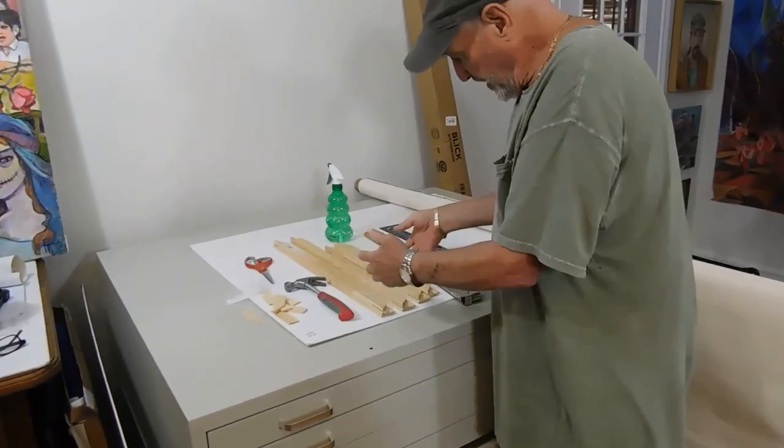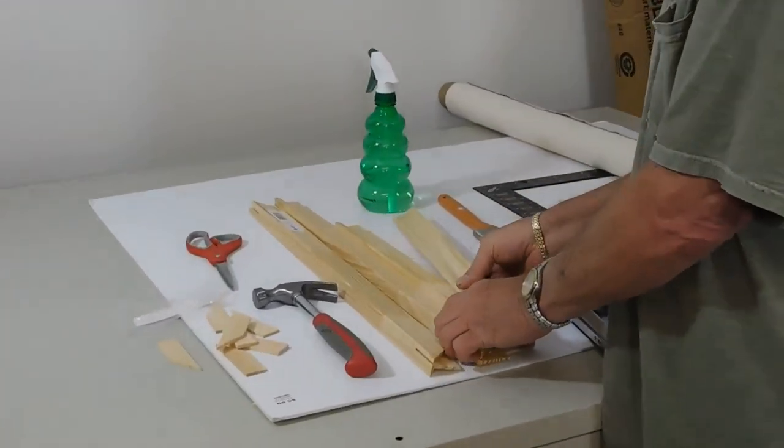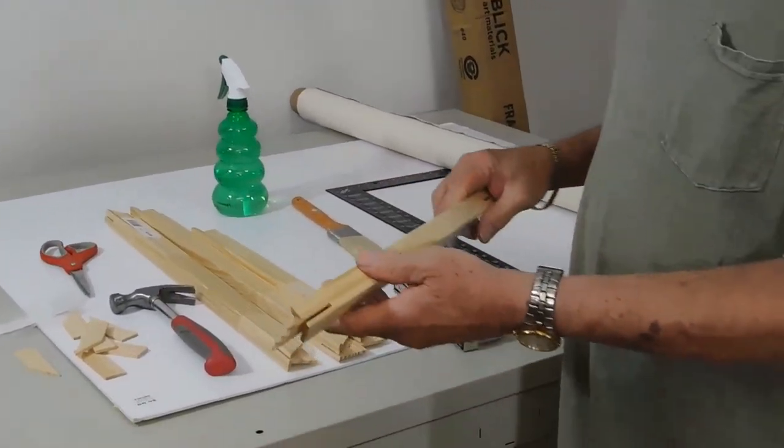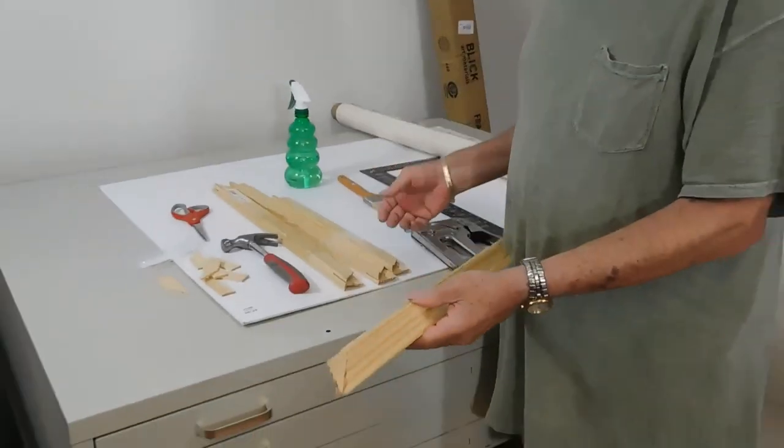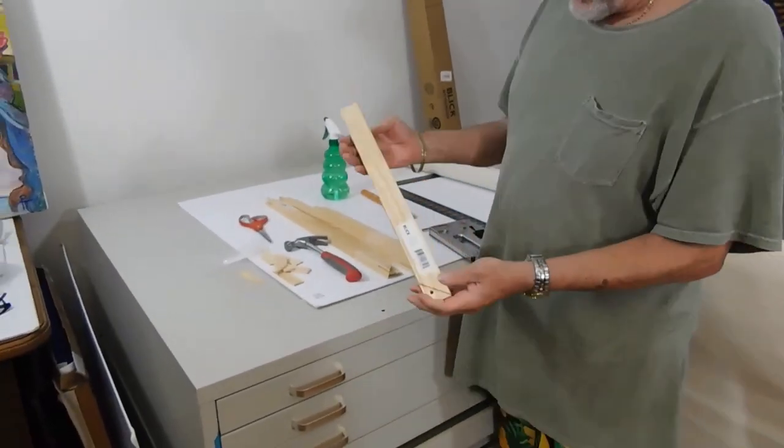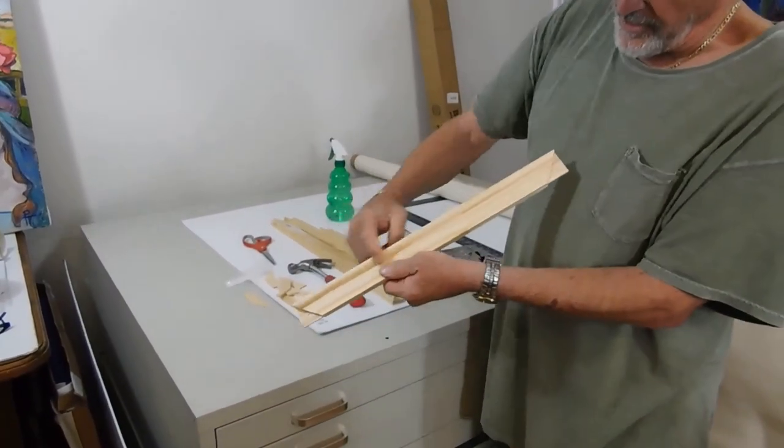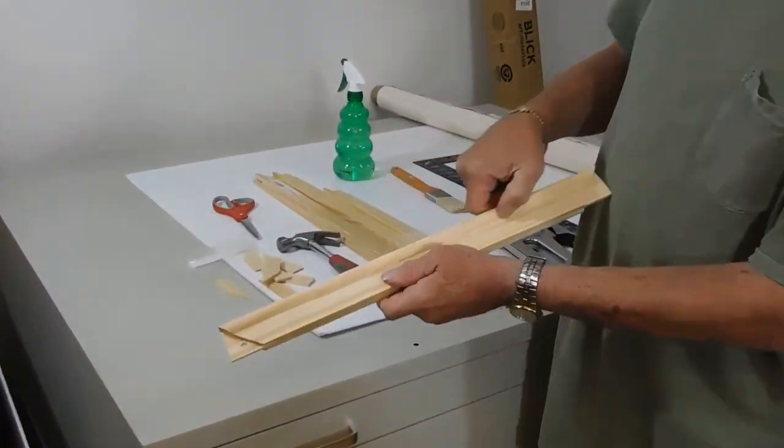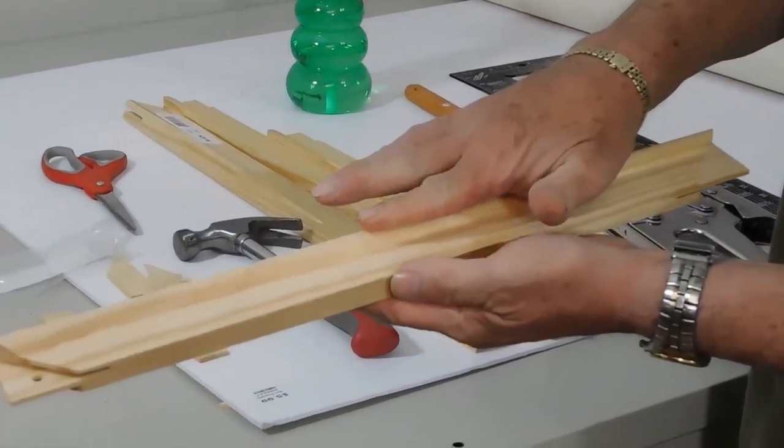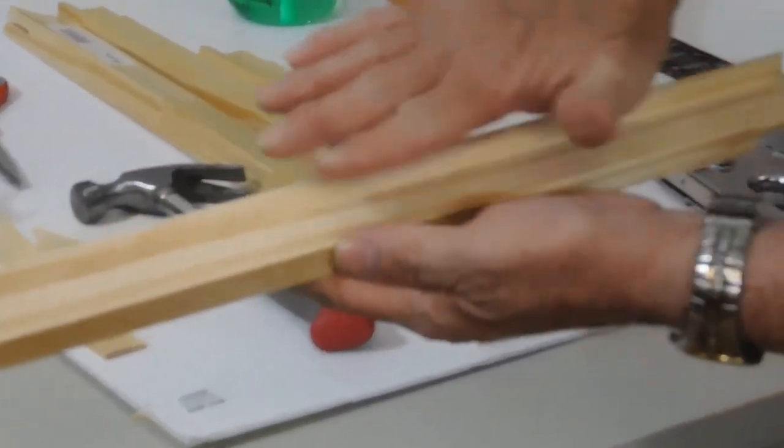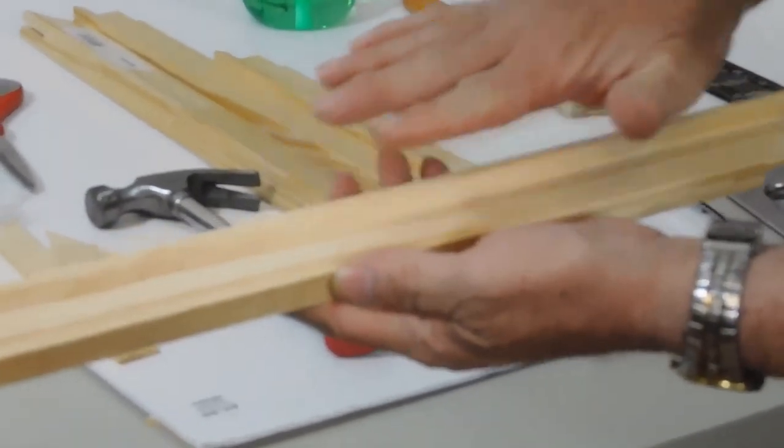Then we have stretcher strips. I buy the regular size for smaller canvases. They have two sides: one flat side and the other has a bevel on it. This big bevel is great so the canvas doesn't have much contact with the stretcher strip.